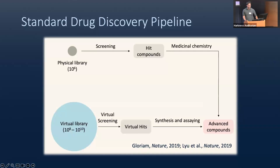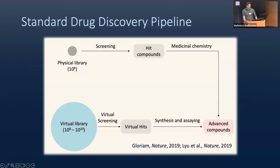More recently, folks have started developing virtual libraries — libraries of molecules that exist on a computer. On a computer you have lots more space to work with, so you can construct larger libraries of around a billion or even 10 billion molecules. You can perform physics-based simulation, dock these molecules to a target, measure interactions, and come up with virtual hits that you then synthesize and run assays on. But even these virtual libraries, the largest of which are around 10 to the 10, are still many orders of magnitude smaller than 10 to the 60 — the chemical space we want to be considering.